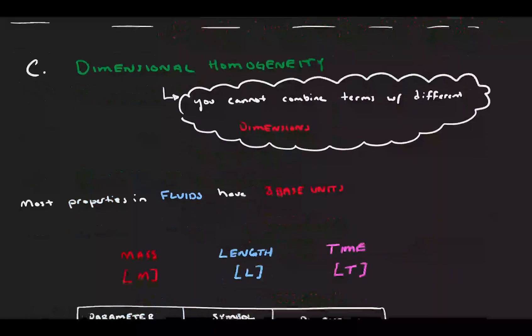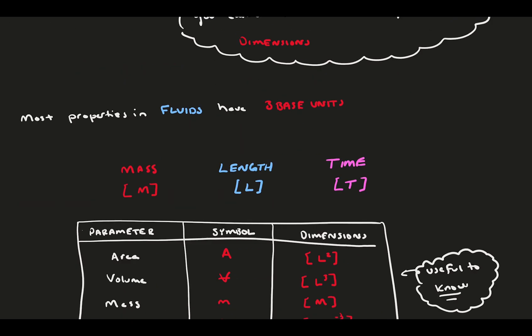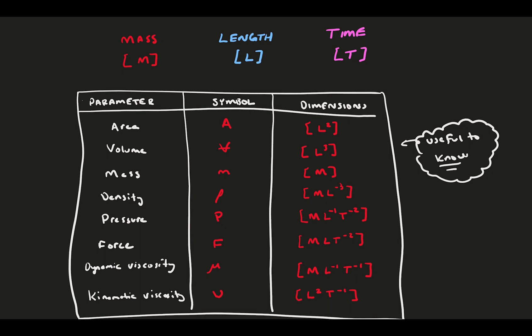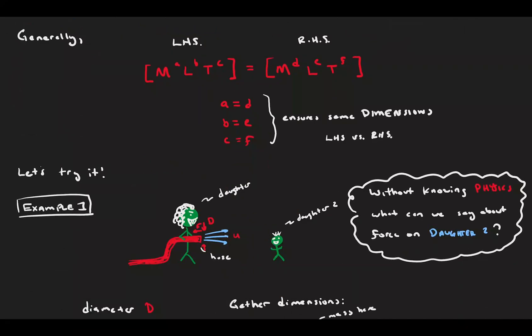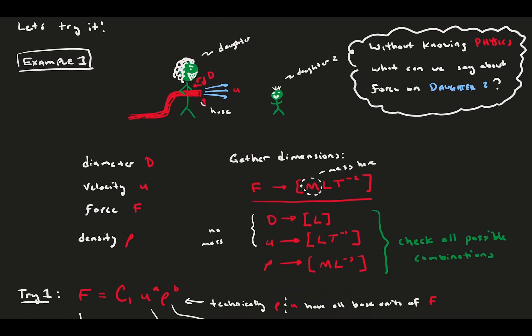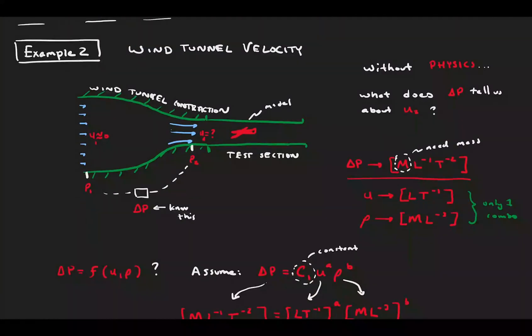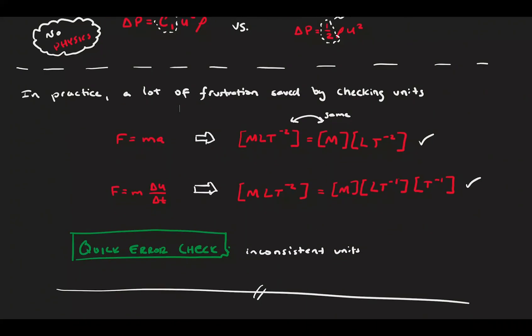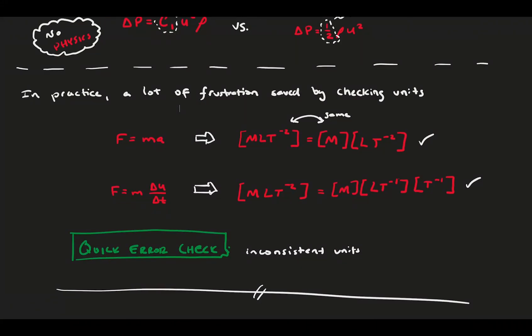Let's review. We started by introducing the concept of dimensional homogeneity, that all equations must have consistent units and you can't combine two things with different units. The three main base dimensions for fluids are mass, length, and time, and they're distributed in many different parameters in different ways. Then, we learned how to use the dimensional homogeneity to crudely solve problems without knowledge of physics through two examples. In each case, we tried combinations of the problem parameters and got very close to the right answer, at least within a constant. In practice, checking units is essential in catching our own and other mistakes. I hope you liked the video, and thanks for watching.